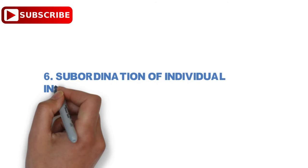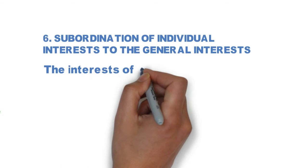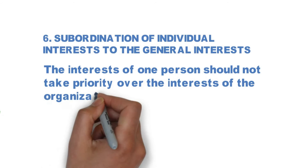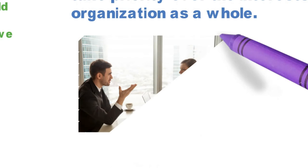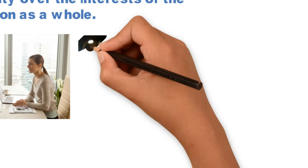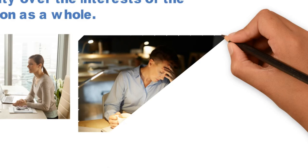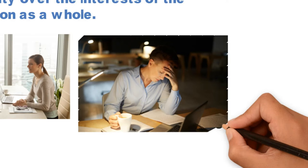Principle number six: Subordination of Individual Interest to the General Interest. The interest of one person should not take priority over the interest of the organization as a whole. The organization must find ways to reconcile the tension between individual and organizational interest. For example, working overtime — sometimes people who work overtime can find it difficult, but the organization can ask people to work overtime when workload has increased or there are too many customers to serve.